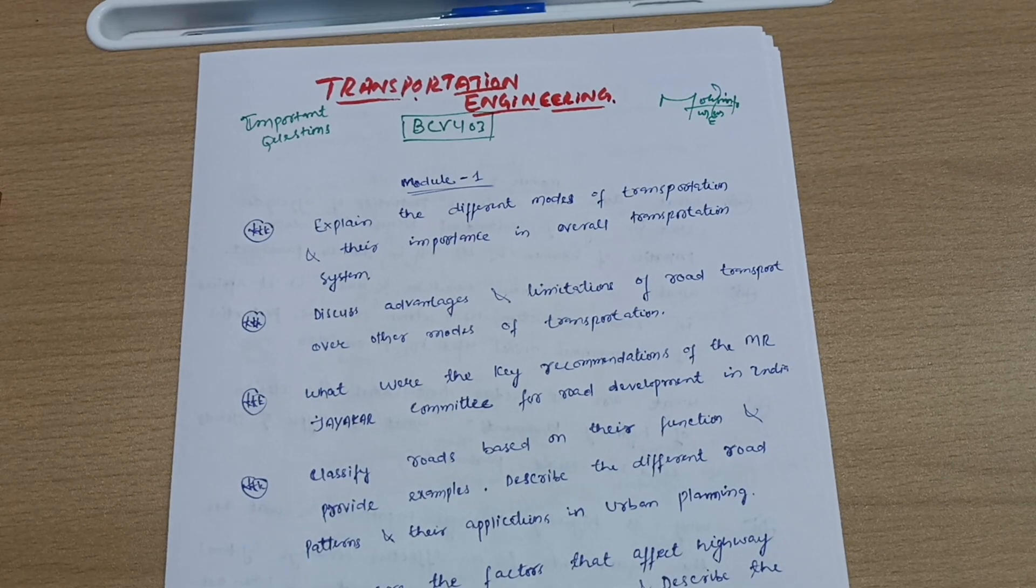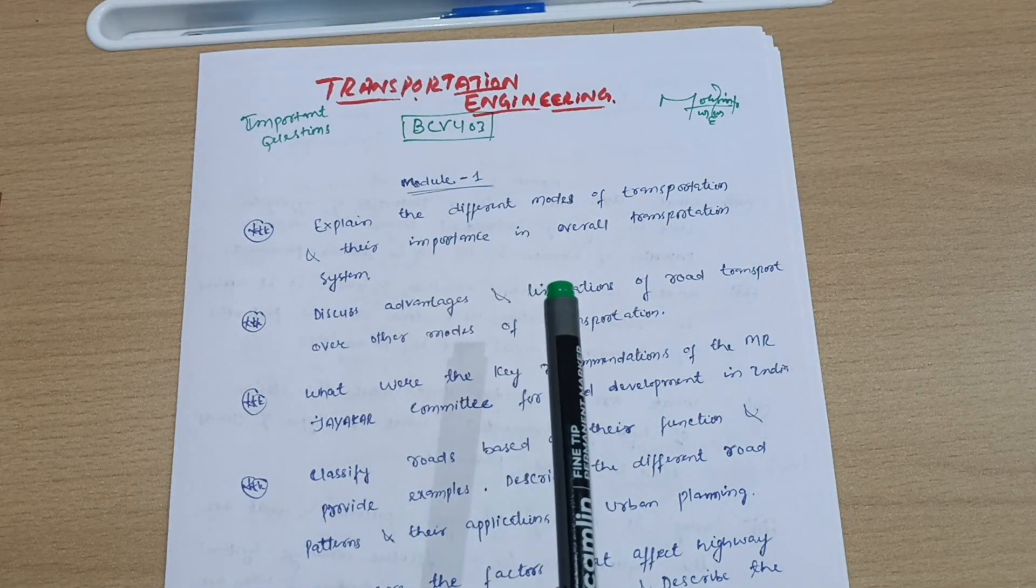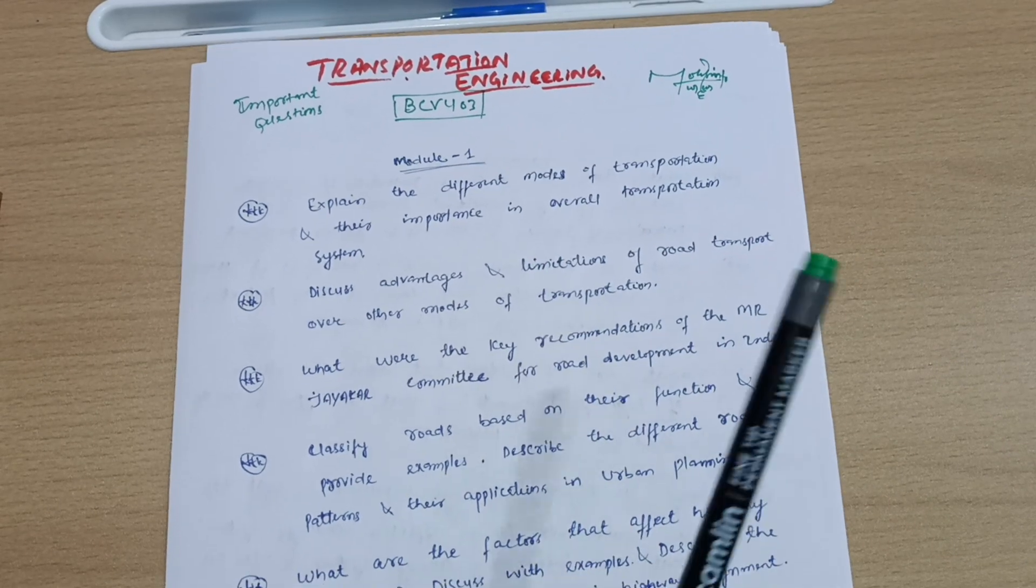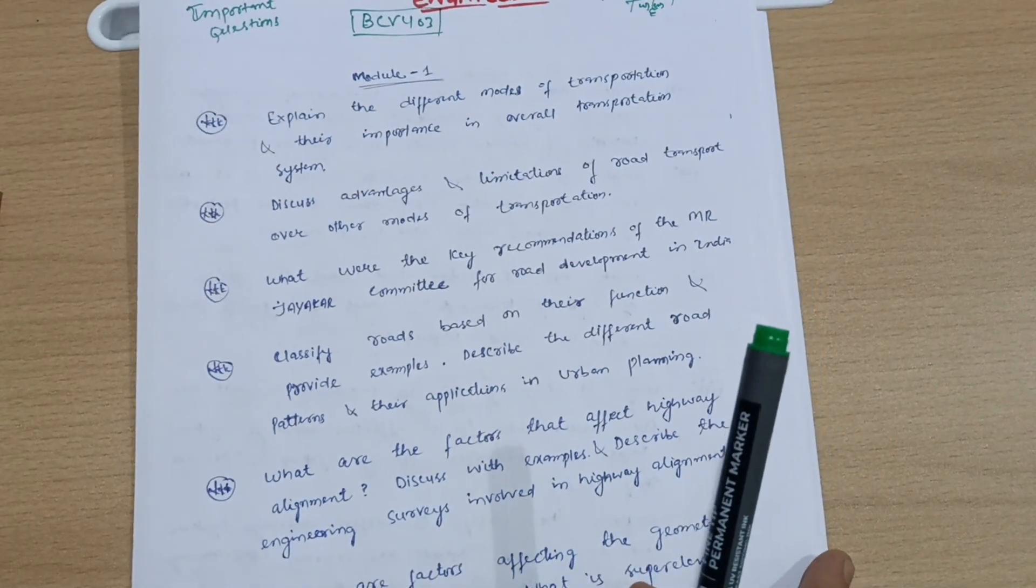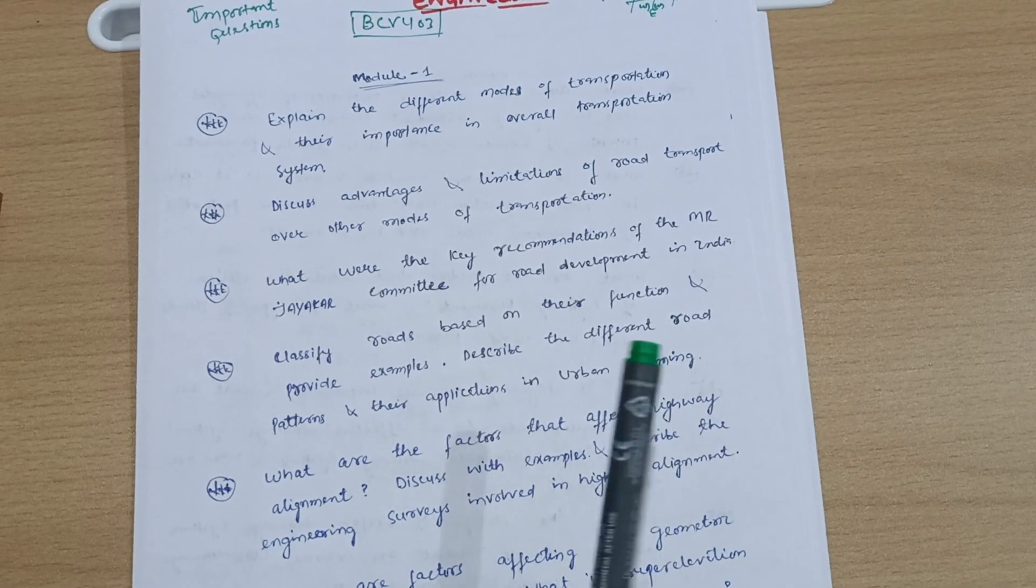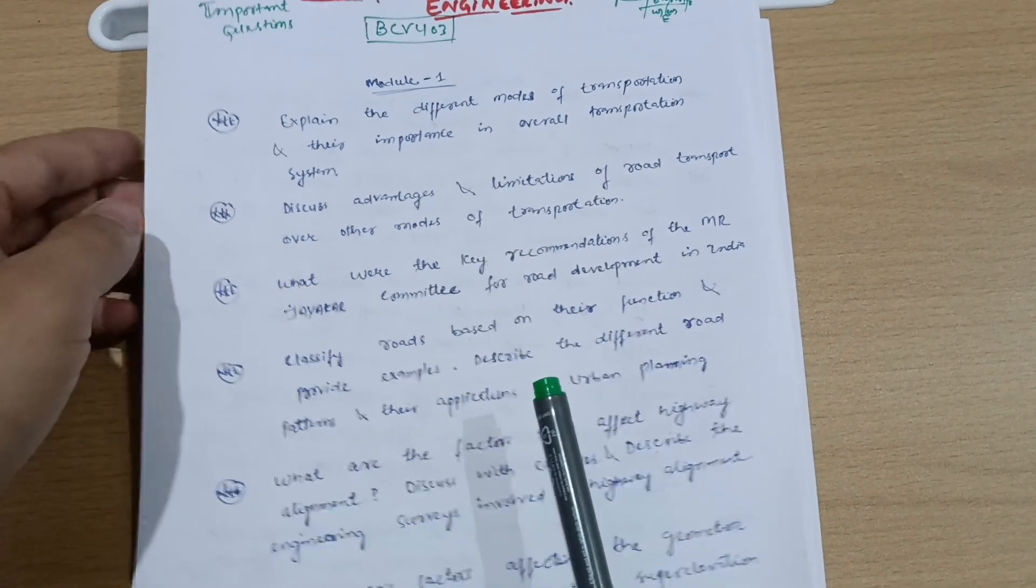Today I'm with the important questions and passing package for your subject Transportation Engineering, BCIV403 is its subject code. Let us discuss module-wise important questions, super important questions which you should go through. As you already know, it is the combination of numerical and theoretical portion. The subject can be passed only by theoretical portion, but you should go through numericals also in order to get good scores.